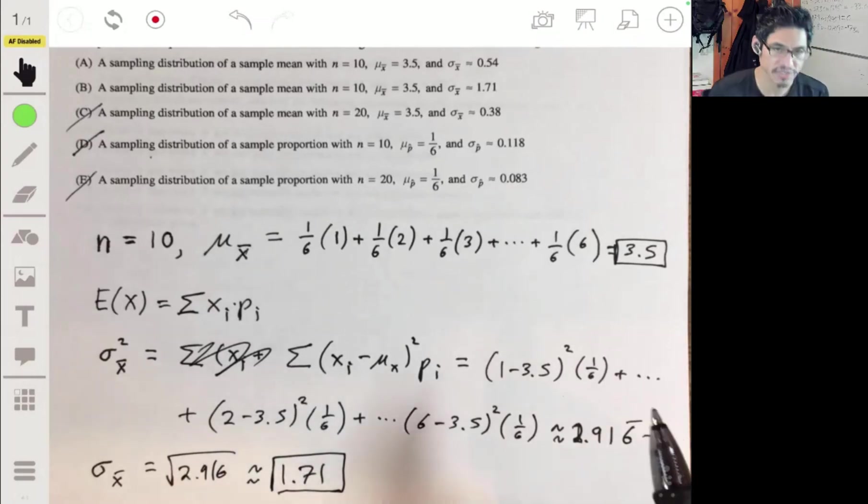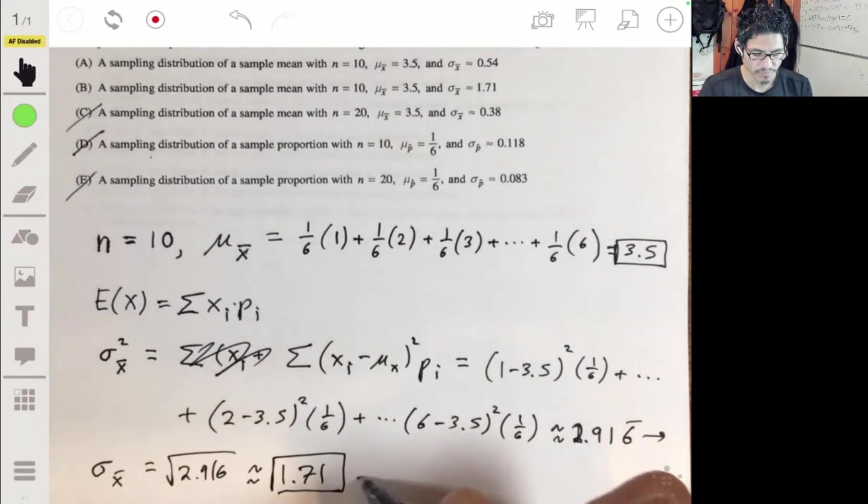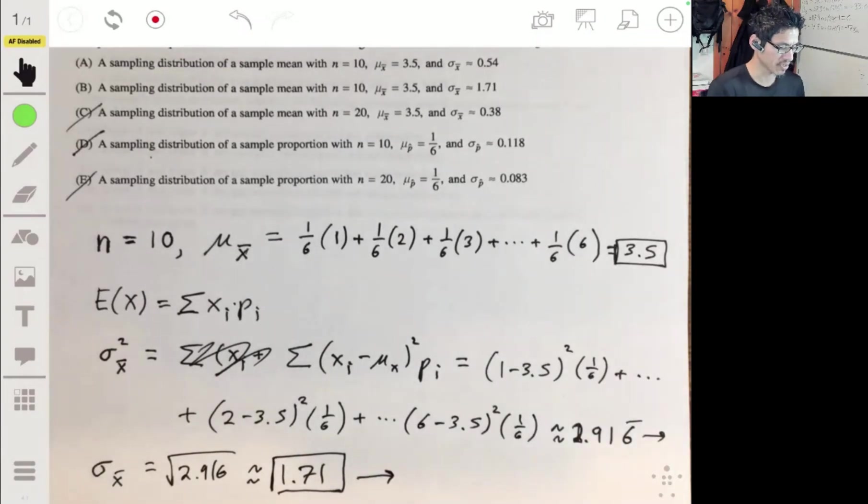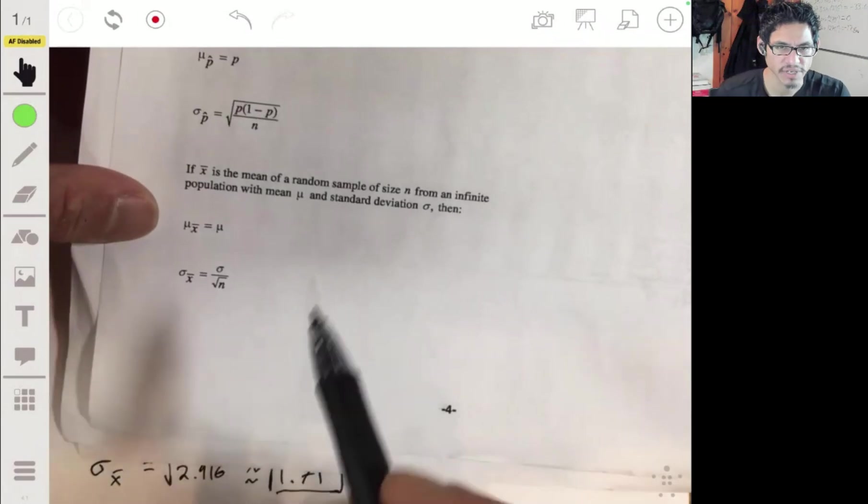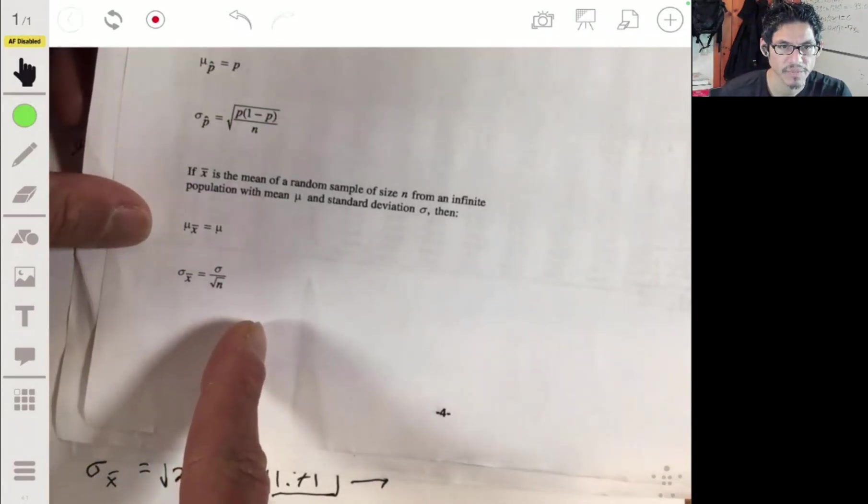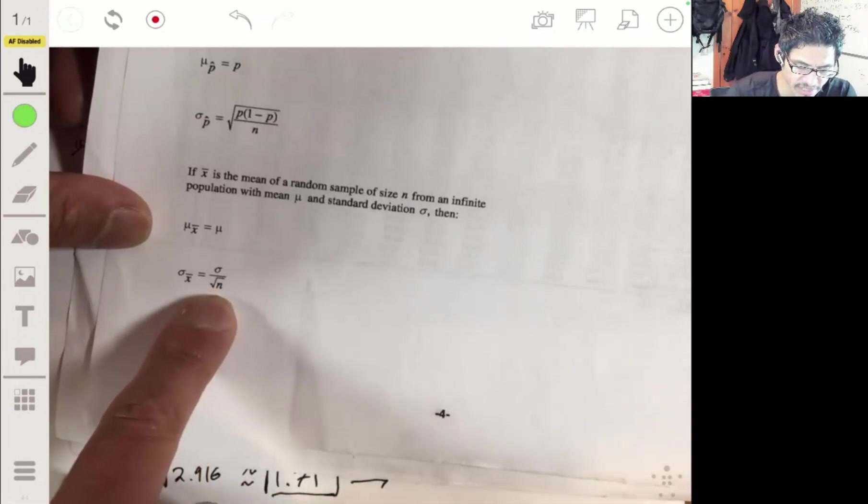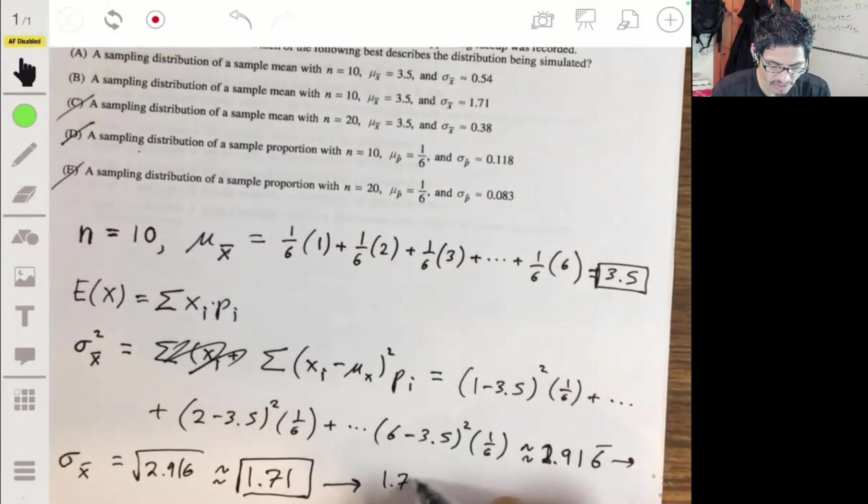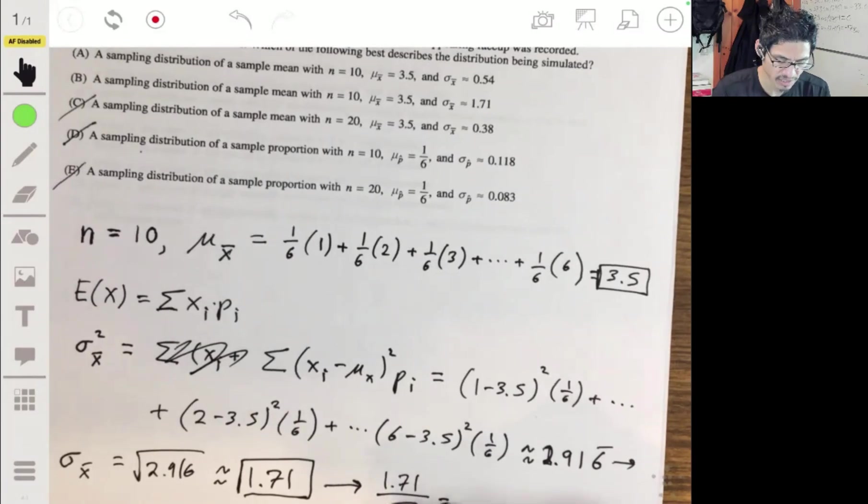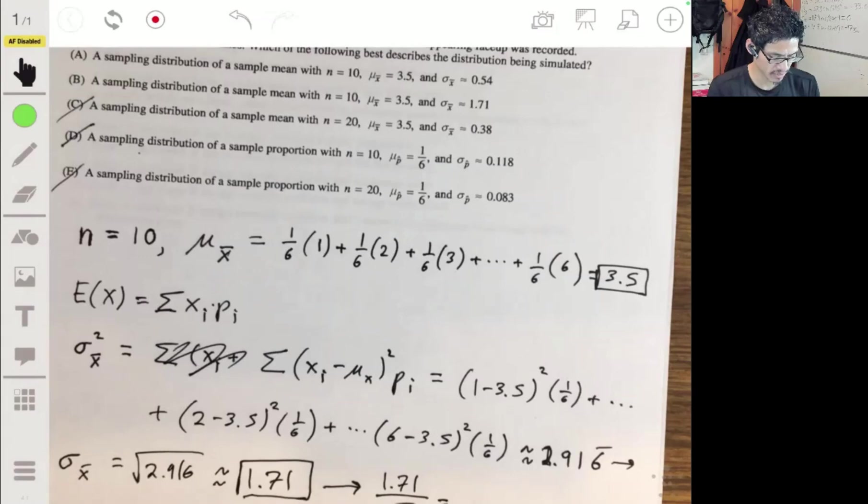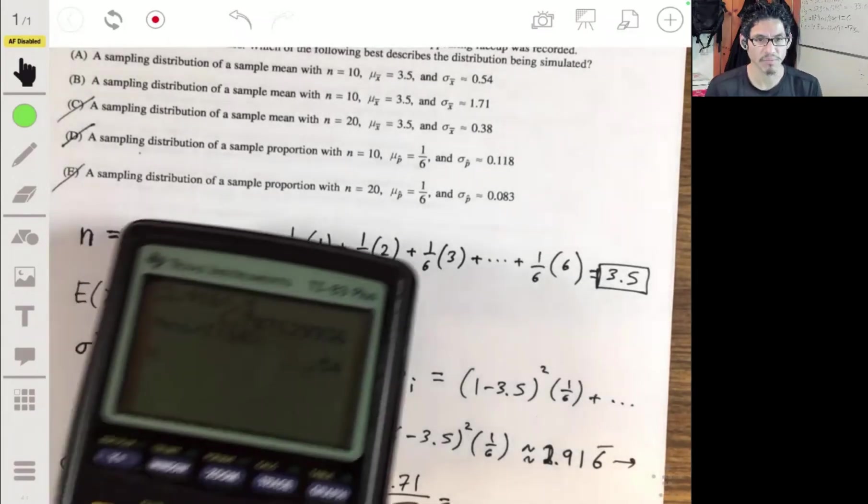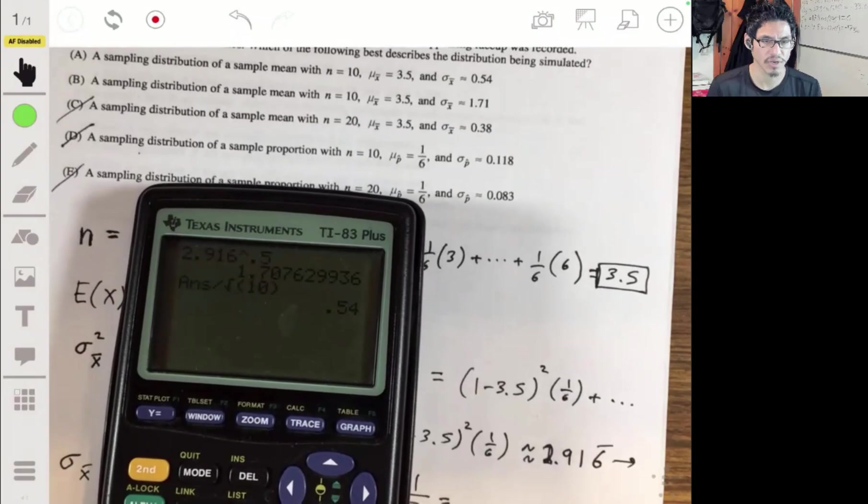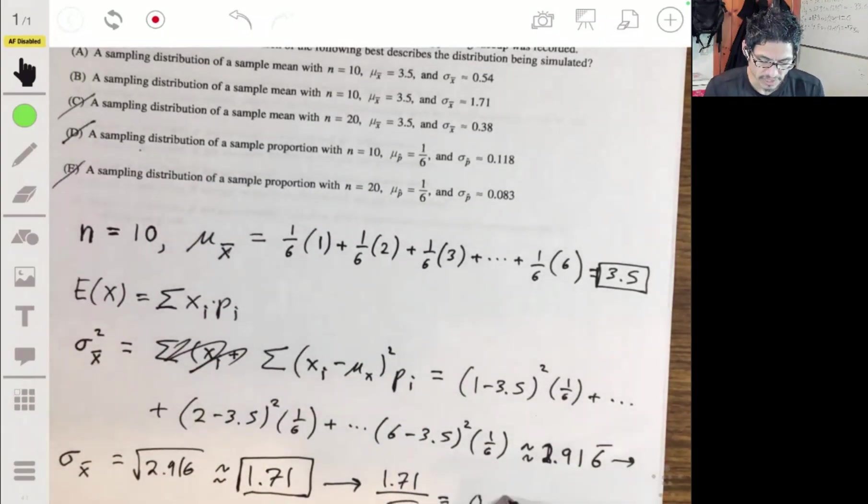Now, here's the thing. It's not going to be B, because we're not done yet. This is probably where most mistakes were made. What we're going to do then is divide it by the square root of the sample size. We take this 1.71 divided by the square root of 10. From there, you'll get about 0.54. So your answer is A.